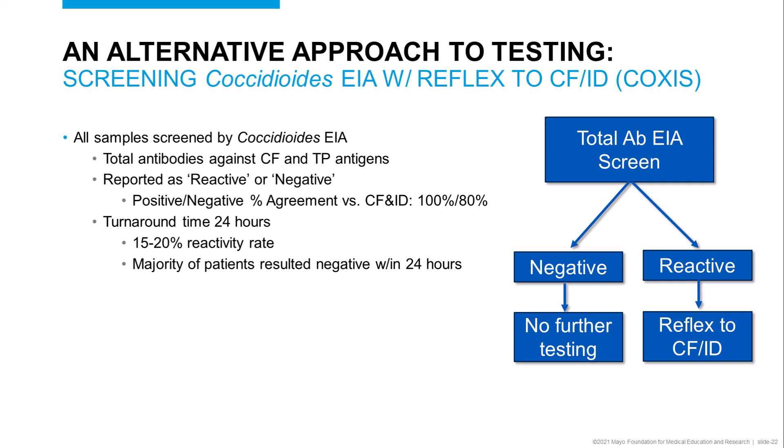What are the benefits of this approach? Given that our EIA reactivity rate varies from 15 to 20% monthly, one of the most significant patient benefits is that for the vast majority of patients — over 80% — the turnaround time for negative results will be within 24 hours of sample receipt, as compared to the current turnaround time of 72 hours if the complement fixation and immunodiffusion panel is ordered first. Additionally, the cost will be lower, as testing will be for a single EIA versus multiple technically challenging and complex assays. From a laboratory perspective, screening out all of the negative samples will alleviate some of the technologist burnout on this high-volume test and allow them to focus on interpretation of positive sample results.